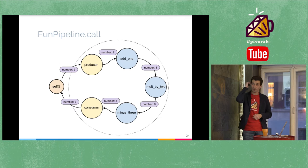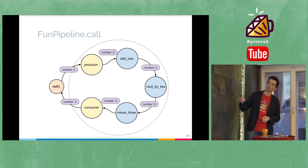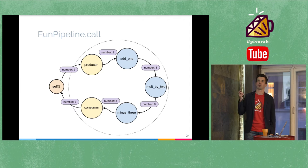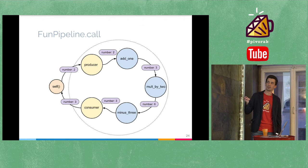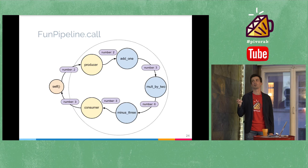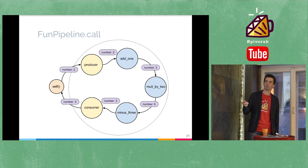Here is my favorite picture to explain what happens when you pass data into the pipeline. There is a producer, and when you call the pipeline it sends the IP package to the producer. The producer does nothing — it just sends it to the first pipe. The first pipe, add_one, returns a new data structure with number three. Then it's passed to the multiply_by_two component and returns number six. Then minus_three returns number three to the consumer, and the consumer returns the final result to the calling process.